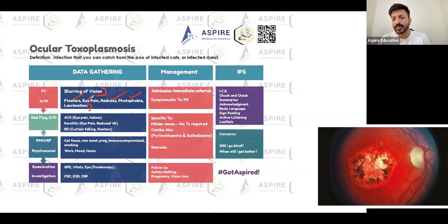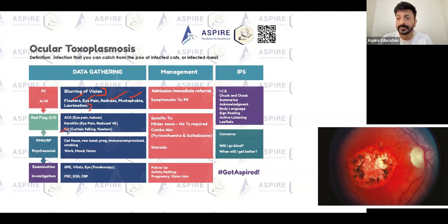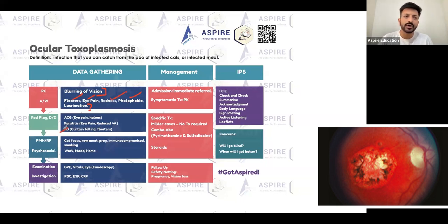So the presenting complaint is blurring of vision. Then retinal detachment — you need to rule it out. If there is pain, consider keratitis, but usually with ocular toxoplasmosis patients describe discomfort rather than frank pain — less of pain, more of discomfort.